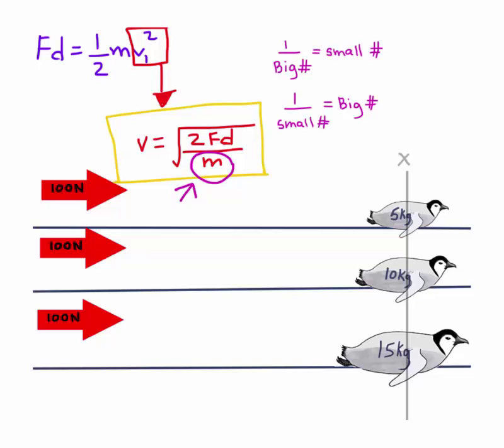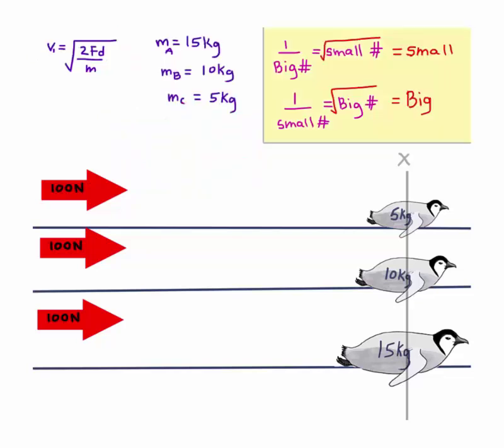When we have a small number in the denominator, we get a big number back. It's helpful to remember this not only for physics but also for math courses. 1 over big is small and 1 over small is equal to big. We are going to keep this here as we answer the question.